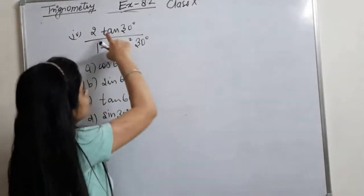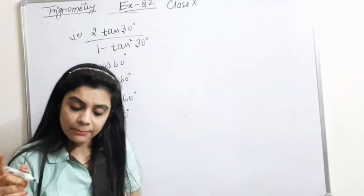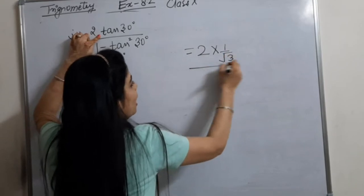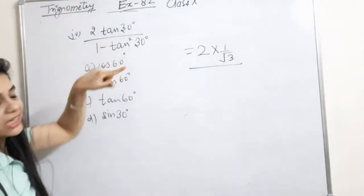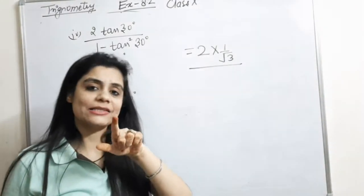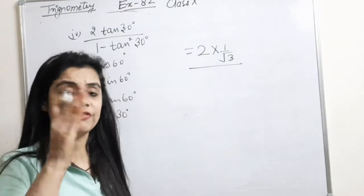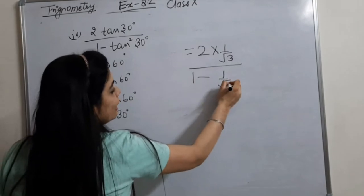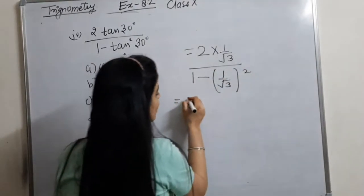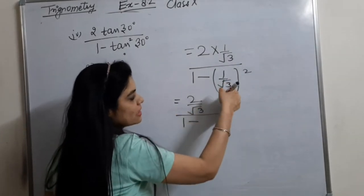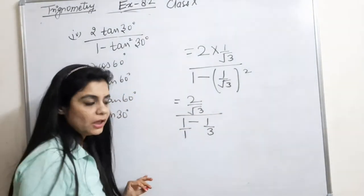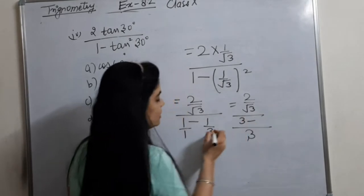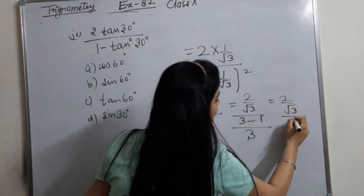So this is the next part: 2tan30 upon 1 minus tan²30. Tan 30, as we did in the first part, equals 1 upon root 3. So we put in: 2 into 1 by root 3 upon 1 minus tan²30. The difference between the first part and this fourth part is just 1 plus versus 1 minus tan²30. So: 2 upon root 3, and the denominator has 1 minus (1/root3)² = 1 minus 1/3. LCM is 3 giving (3−1)/3 = 2/3. So we get 2 upon root 3 upon 2 upon 3.